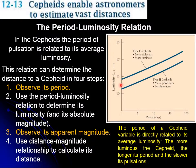The fact that the luminosity is related to the period on a log scale means that if you measure the period of a variable star you can extract the absolute luminosity of that star. This is a very useful tool to find the distance to the star, because knowing the luminosity amounts to knowing the absolute magnitude, and knowing the absolute magnitude and the apparent magnitude can help us calculate the distance. These Cepheids are so bright that we can see them from very far away, at distances where we cannot use the parallax method, but here we have another way of doing it.